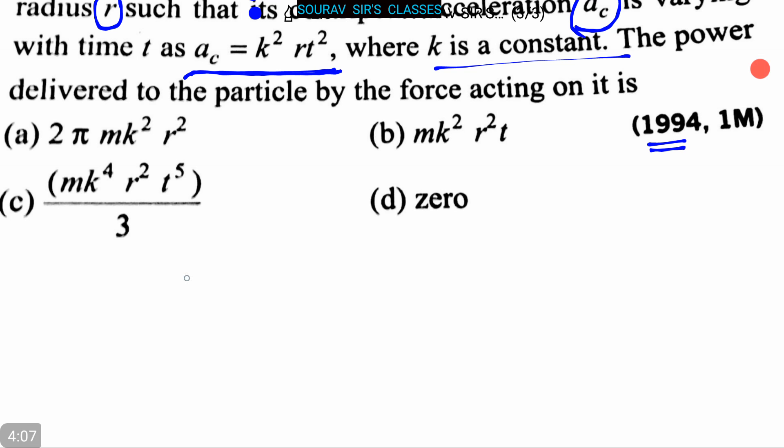It is given in the question that ac is equal to k square rt square, or v square by r is equal to k square rt square, as ac is equal to v square by r.